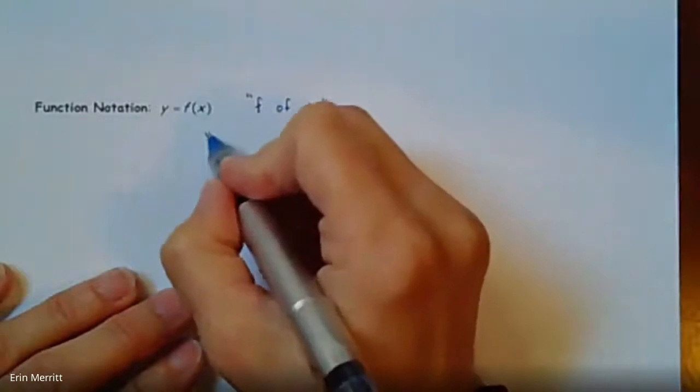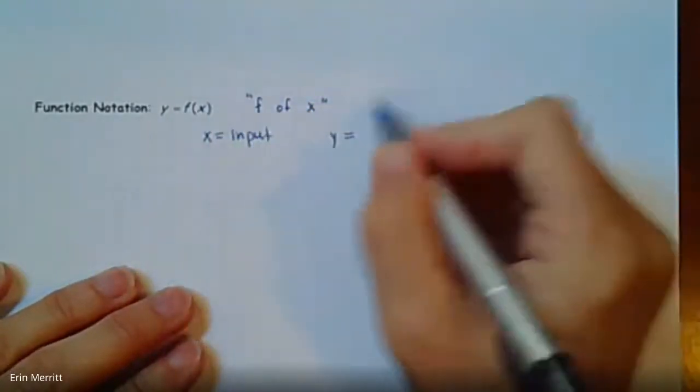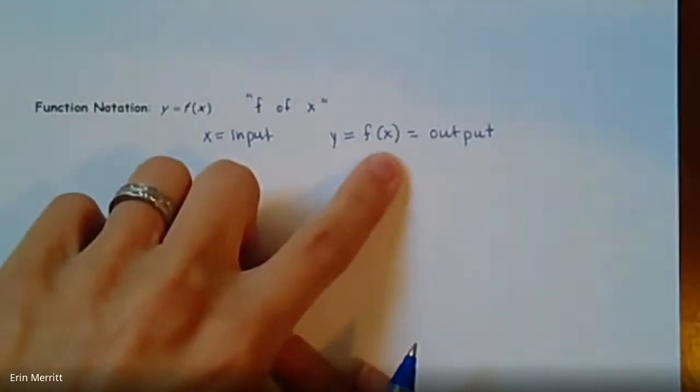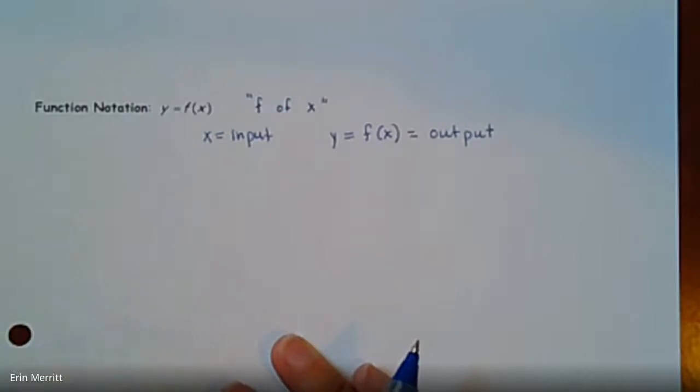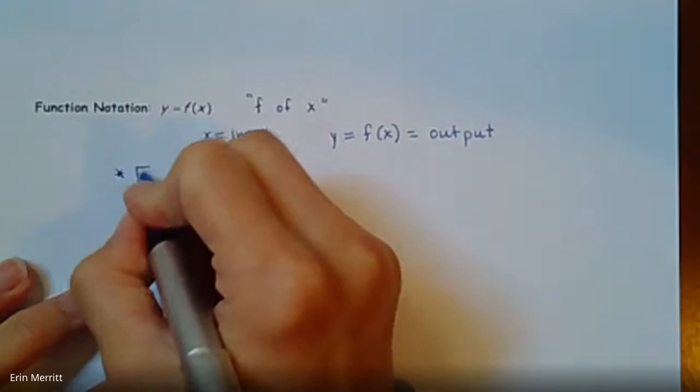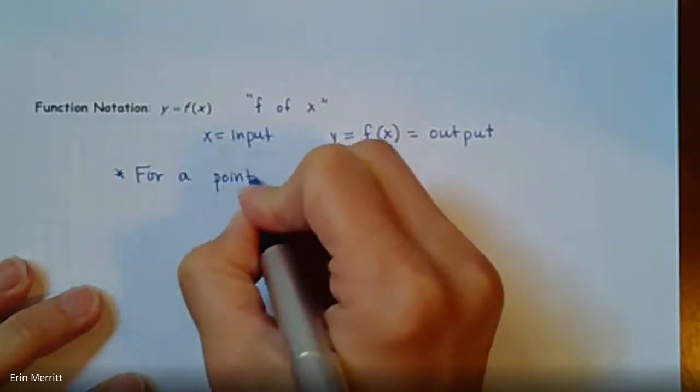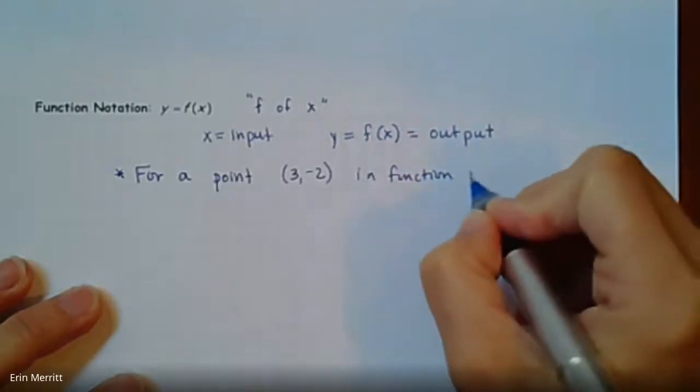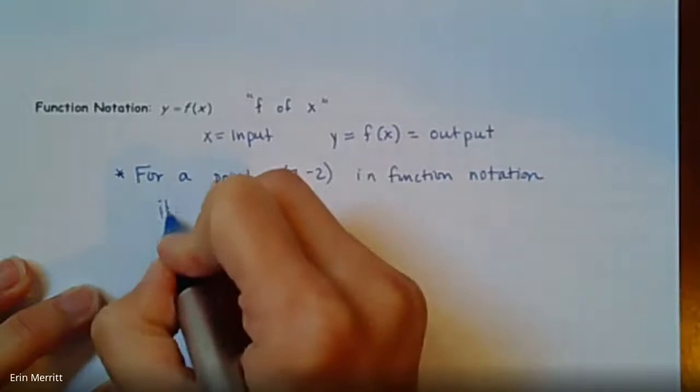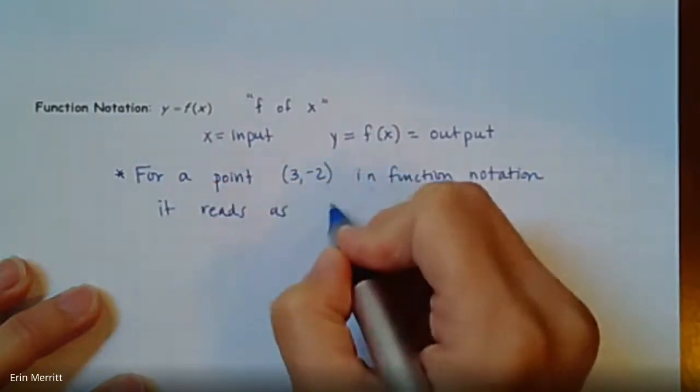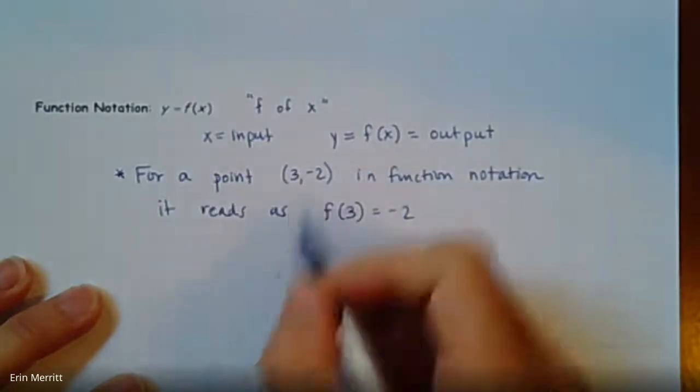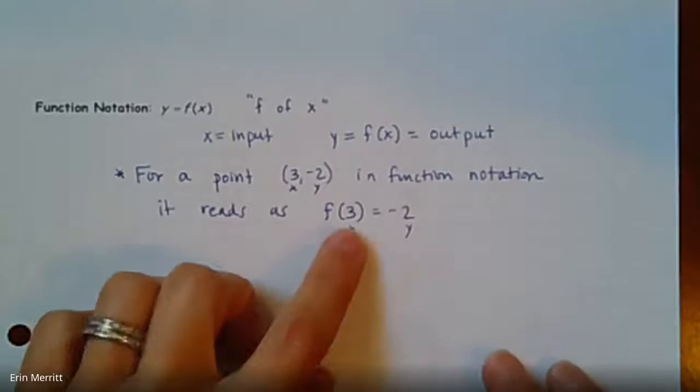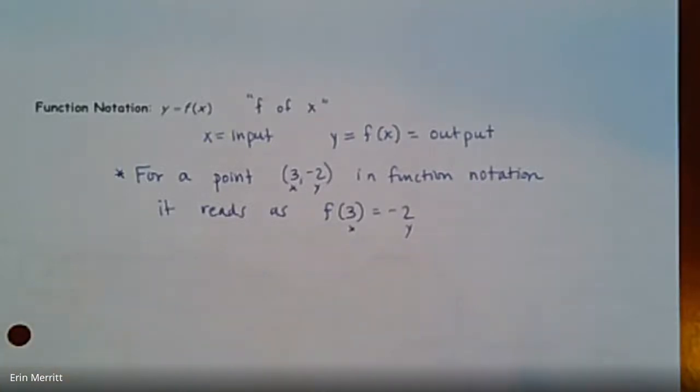So first of all, when we see function notation, we read this as Y equals F of X. So it reads as F of X and that F stands for function. That Y is a function of X. It changes depending on what X is. So X is our input. Y or F of X is our output. And so you can use those interchangeably. Y stands for the exact same thing as F of X. So then why would we have a new notation? Well, it's kind of nice. So as an example, let's say it's the point like (3, -2). In function notation, it reads as F of three equals negative two.